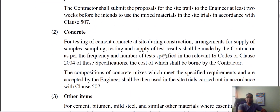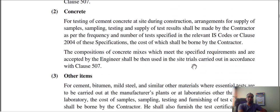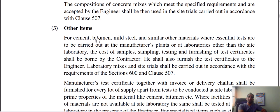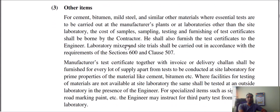There are important items covering filling, paving, and paving materials — the cost shall be borne by the contractor. For other items like cement, bitumen, and mild steel, where essential tests are carried out at the manufacturing plant or at a laboratory other than the site laboratory, the cost of sampling, testing, and furnishing the test certificate shall be borne by the contractor. The contractor shall also furnish the test certificate to the engineer.